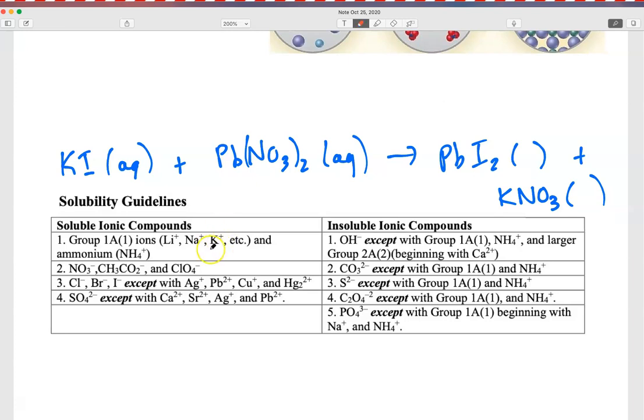Looking at the solubility guidelines table that's on our equation sheet for this class, we can just look for the different ions to try to figure out which one of the potential products is actually a solid. So if I look at potassium, here it is, and it's listed under the soluble ionic compounds, as is nitrate. And so we are going to conclude that the potassium nitrate is not the solid. It's still a dissolved compound.